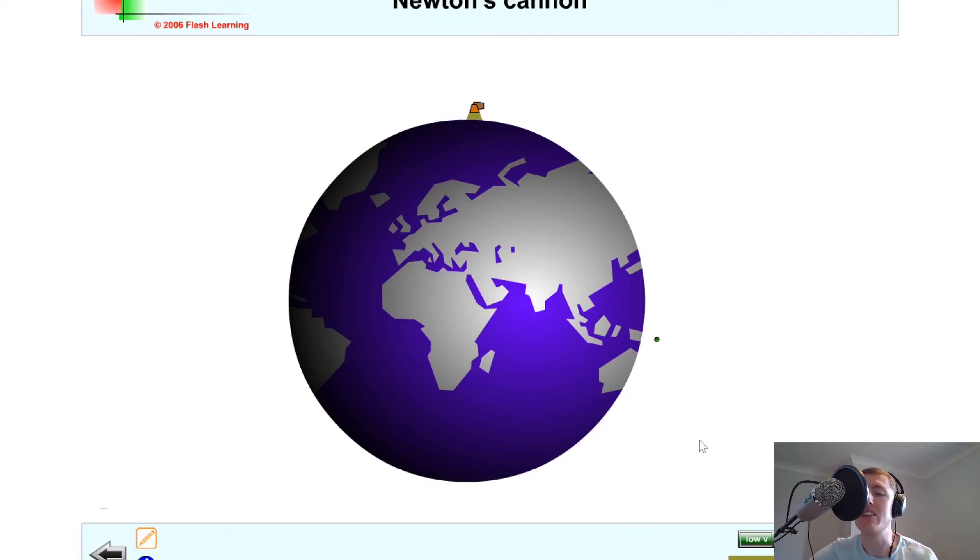So what we're saying is that this projectile or satellite in a sense is going to continue to move in a circular motion around the Earth's surface because it's traveling at the exact horizontal velocity which makes it fall towards the surface of the Earth at the exact same rate as the Earth's surface curves away from it.